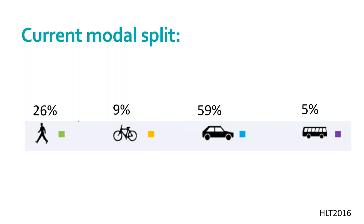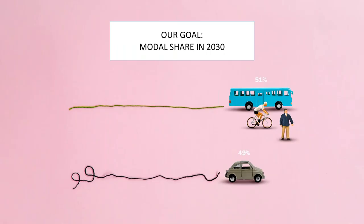Lahti is very car dependent, even though there is great potential for becoming a very sustainable city for mobility. Cycling is 9% during the whole year — increasing in summer and decreasing in winter, so winter maintenance is a key focus. Public transport is only 5%, which is very low. Our goal for the Lahti direction process is to have more than 50% of trips made by sustainable modes by 2030, a goal written into the city strategy.